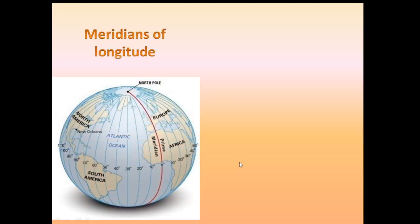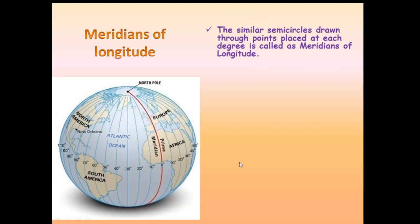Now what are meridians of longitude? The similar circles that you can see everywhere on the earth which are vertical are placed at each degree — like 10 degree, 20 degree, 30 degree, 40 degree. These are nothing but these lines — the entire line at 10 degree, 20 degree — all are nothing but meridians of longitude.